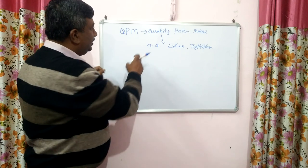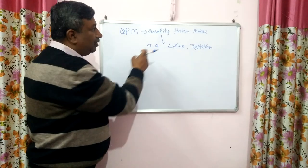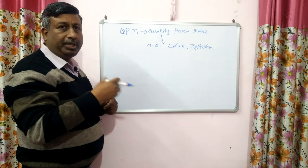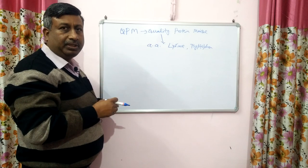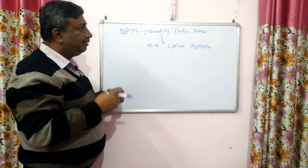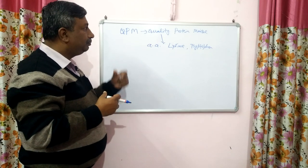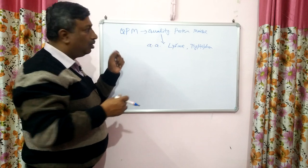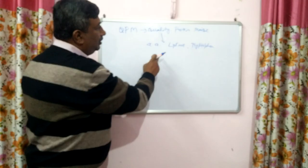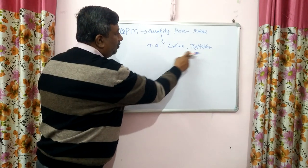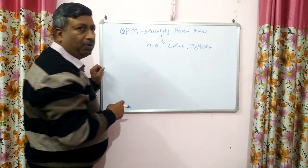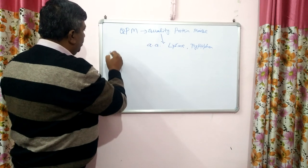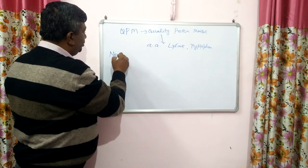In the case of maize, which is a major food crop particularly in African countries, if people consume normal maize, they suffer from deficiency of lysine and tryptophan.